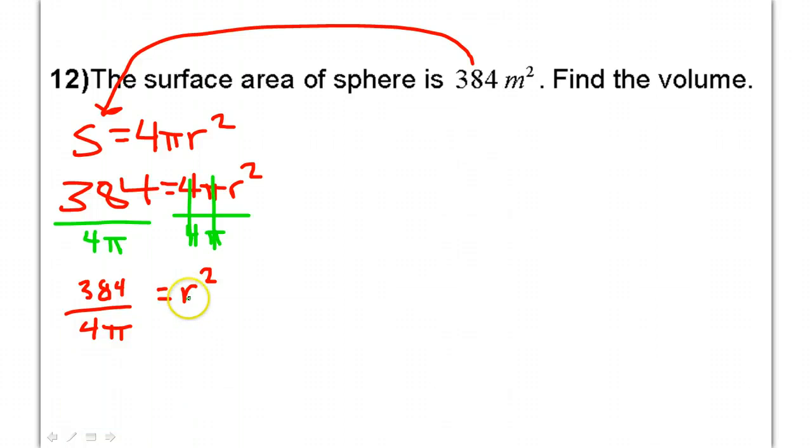If I want to get r by itself, I need to unsquare the r. I'm going to do that using the square root. So I would take the square root of both sides. Notice I did not make a decimal ahead of time. I'm leaving it as a fraction and just taking the square root of the entire expression.